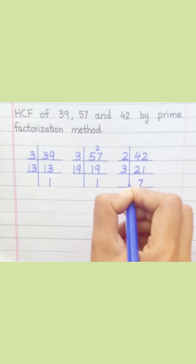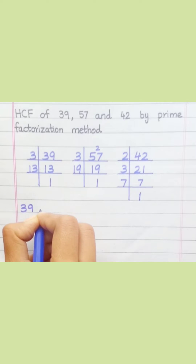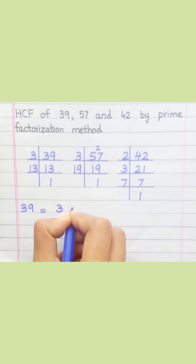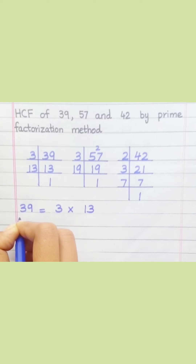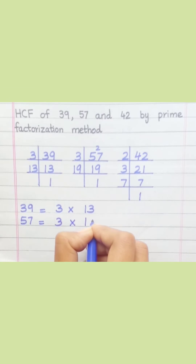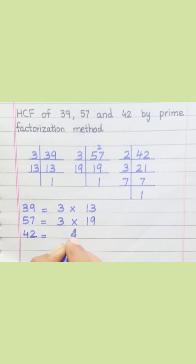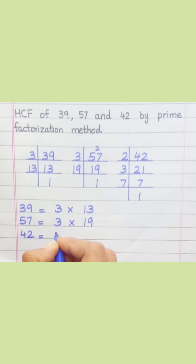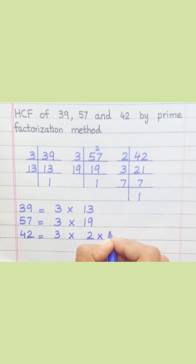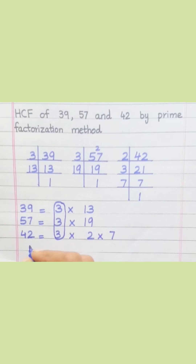So 39 equals 3 multiply 13, 57 equals 3 multiply 19, 42 equals 3 multiply 2 multiply 7. Looking at the factors that are common to all of the given numbers, HCF equals 3.